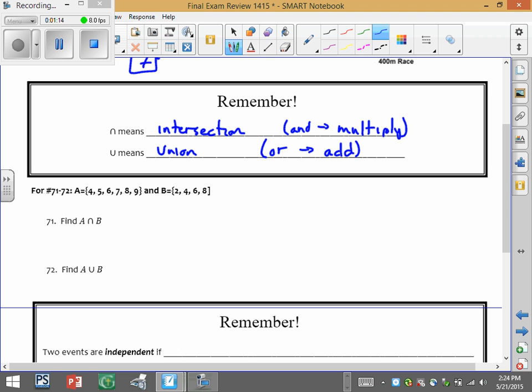In terms of a Venn diagram, remember the intersection is the space here, and then the union is everything together.